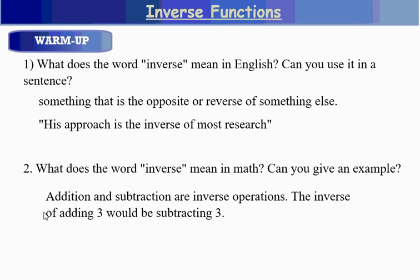So addition and subtraction are inverse operations. If I start at a number and add 3, the inverse of adding 3 would be subtracting 3 because I get back to the same number. For example, if I start at 12 and add 3, I'm at 15. If I then subtract 3, I'm back to 12 — back to where I started. So they undo one another.